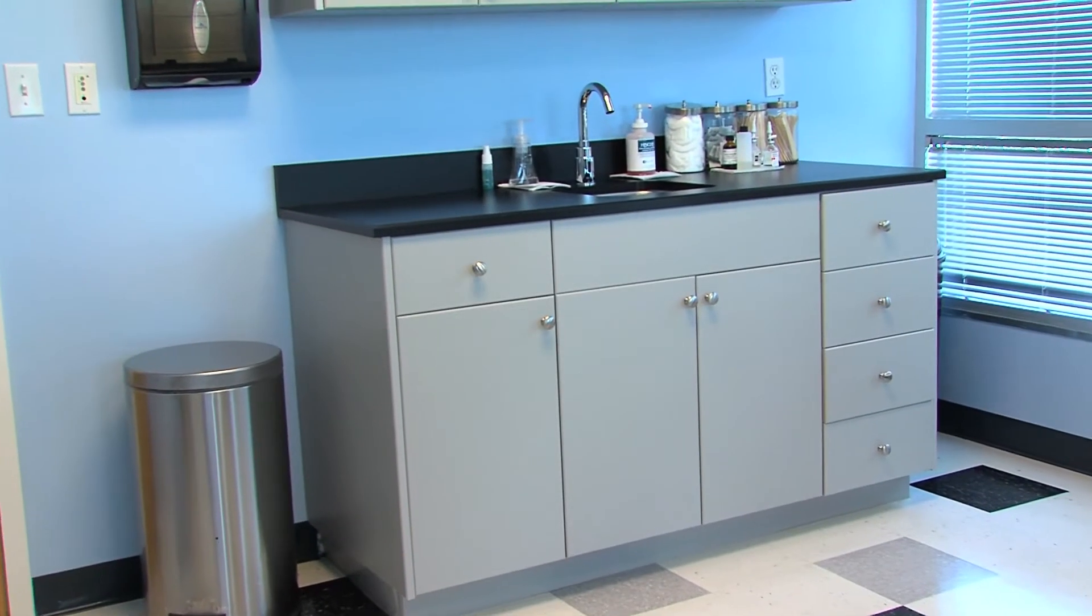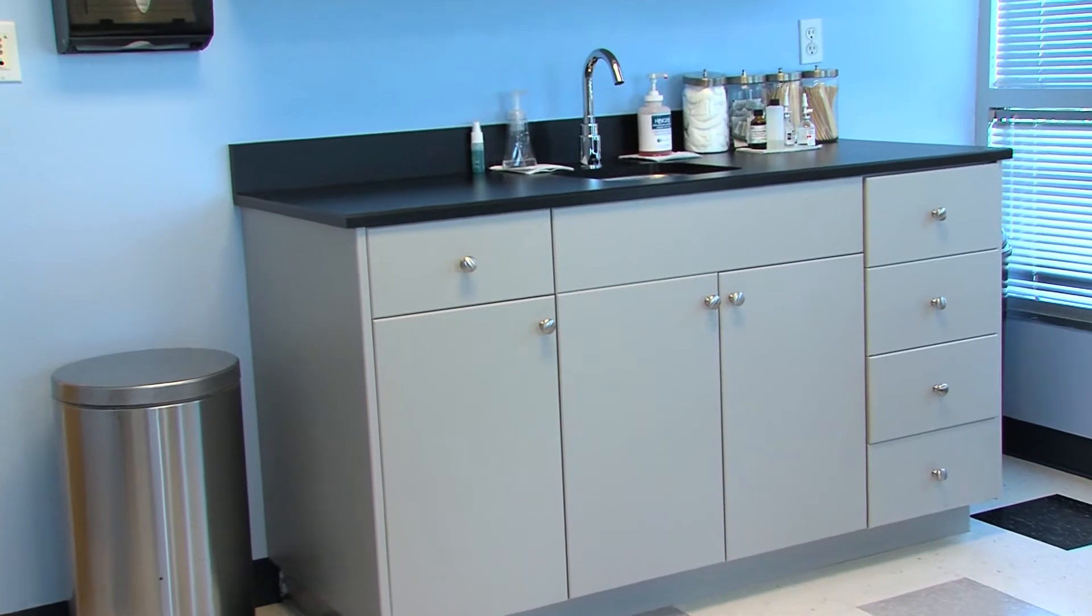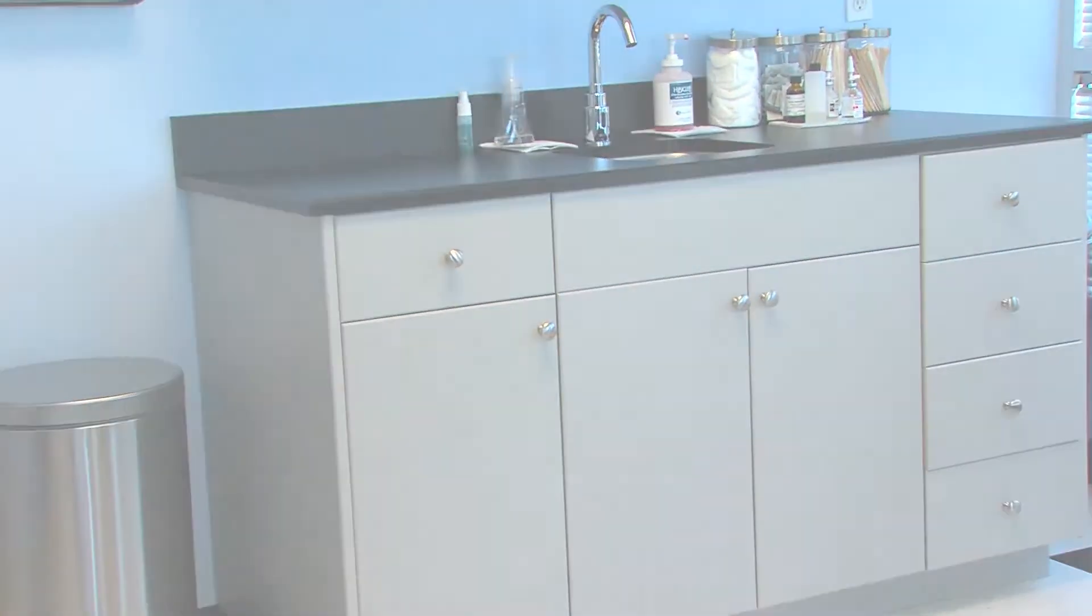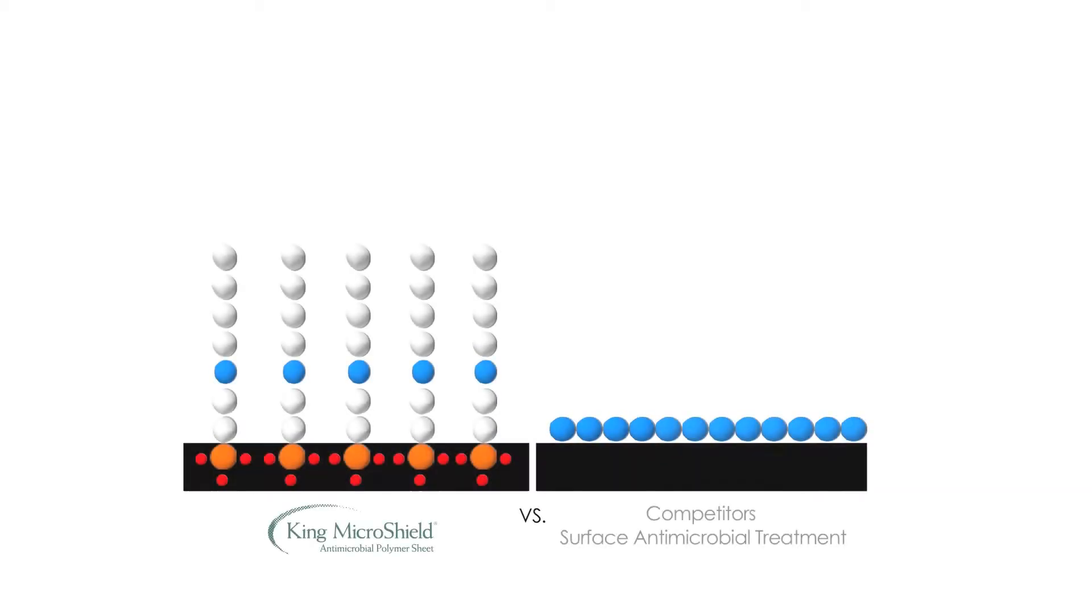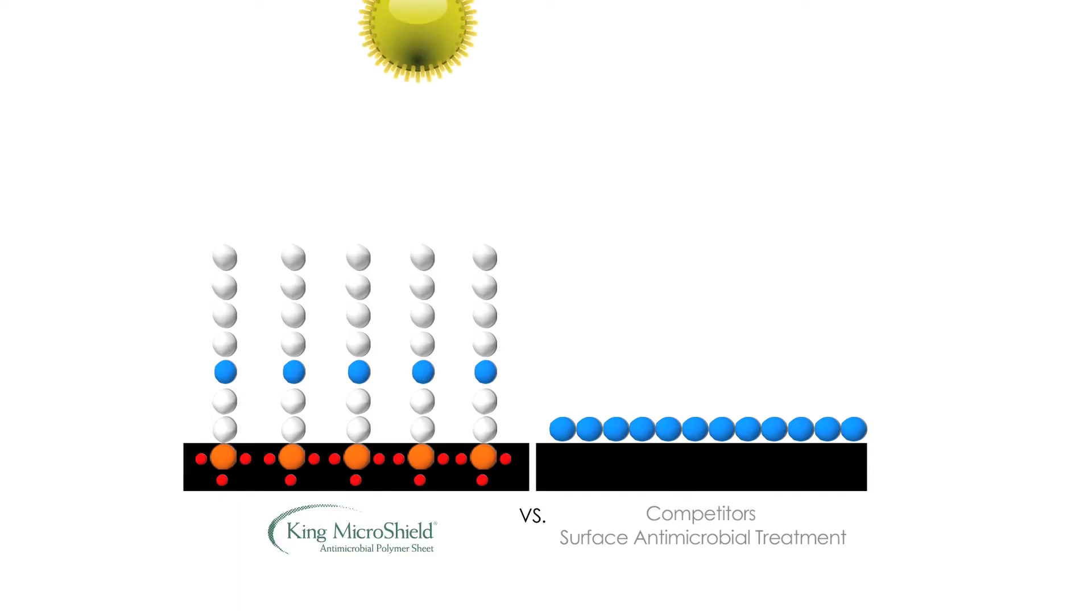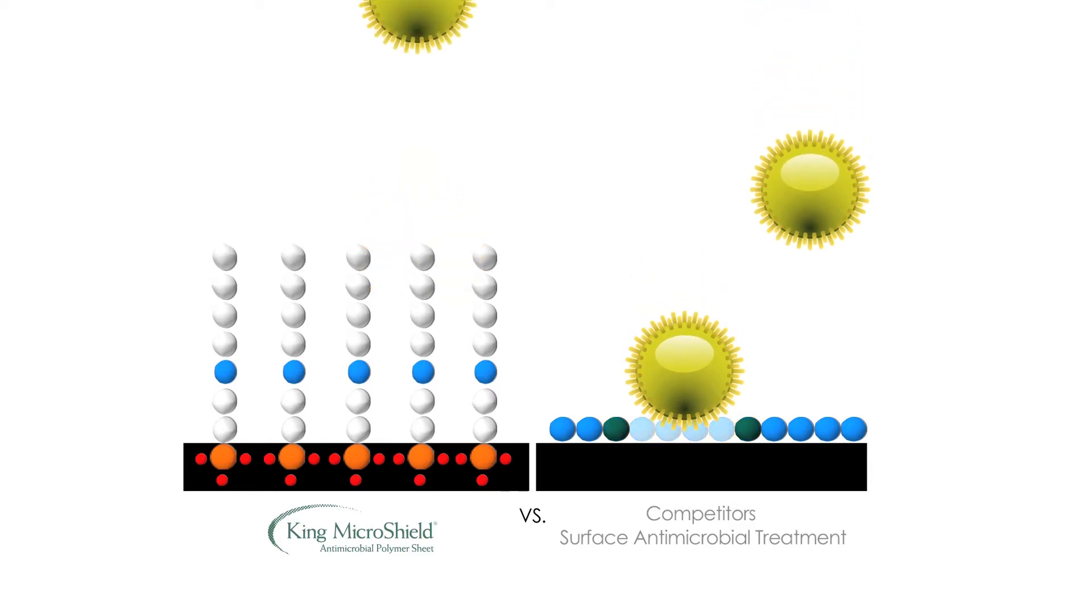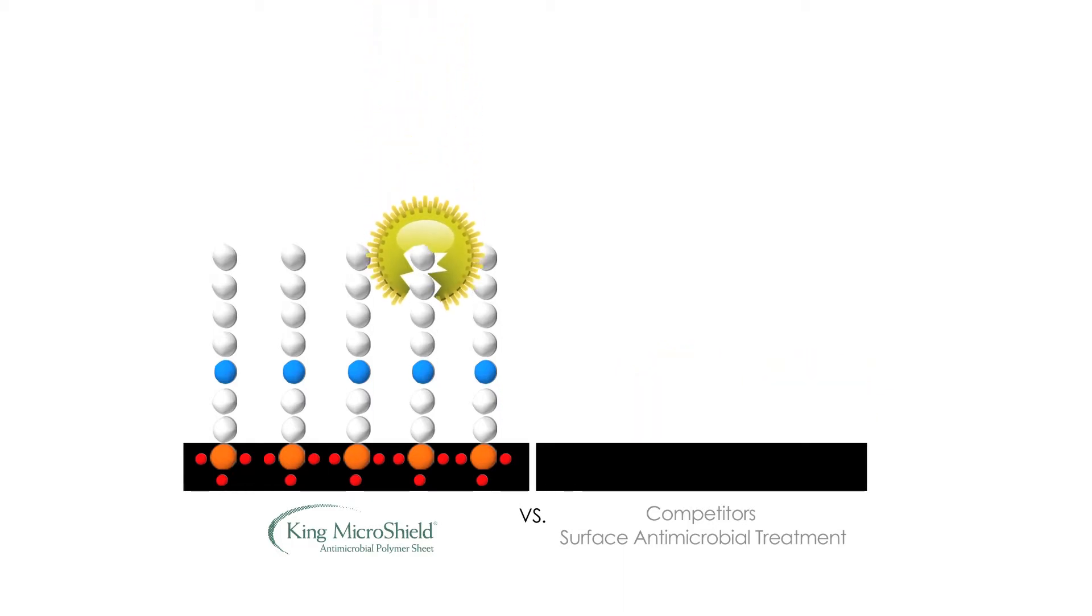King Microshield products with the antimicrobial additive last for the lifetime of the product. Unlike surface antimicrobial treatments, the antimicrobial additive is bonded at the molecular level at the beginning of the extrusion process, keeping it from being able to ever leach out of the product and permanently protecting the plastic. This means the antimicrobial agent retains its effectiveness throughout the life of the product.